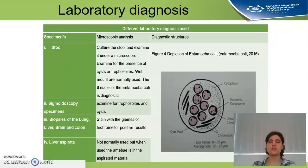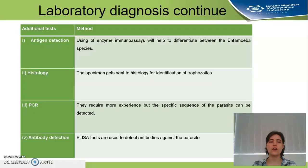For laboratory diagnosis, samples you can use include stool samples, sigmoidoscopy specimens, biopsies of the lung, liver, brain, and colon, and liver aspirates — though liver aspirates are not normally used; if used, the aspirated material is used to diagnose it. Other diagnostic methods include antigen detection, histology, PCR, and antibody detection.